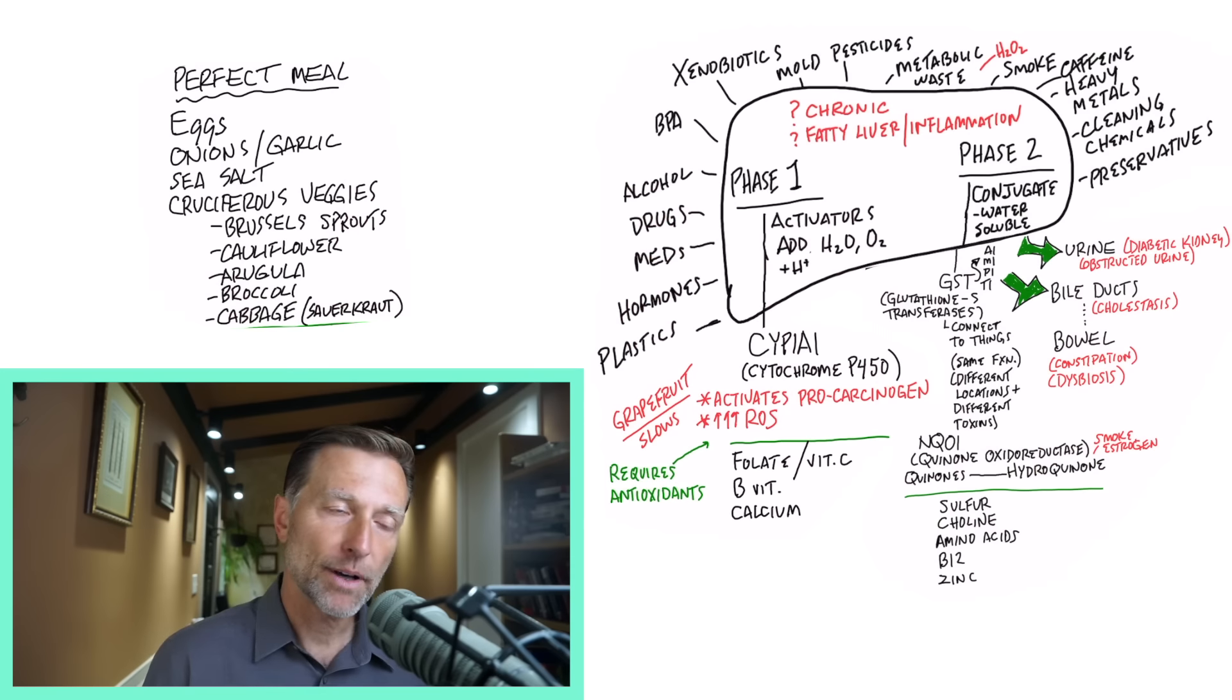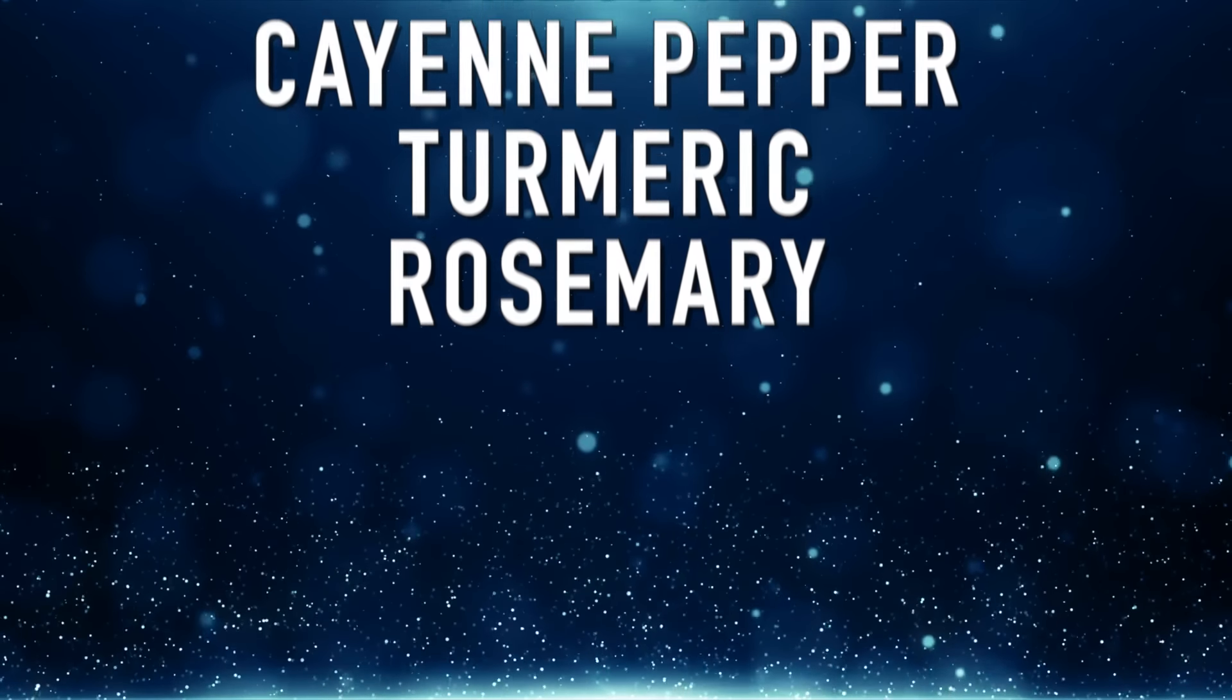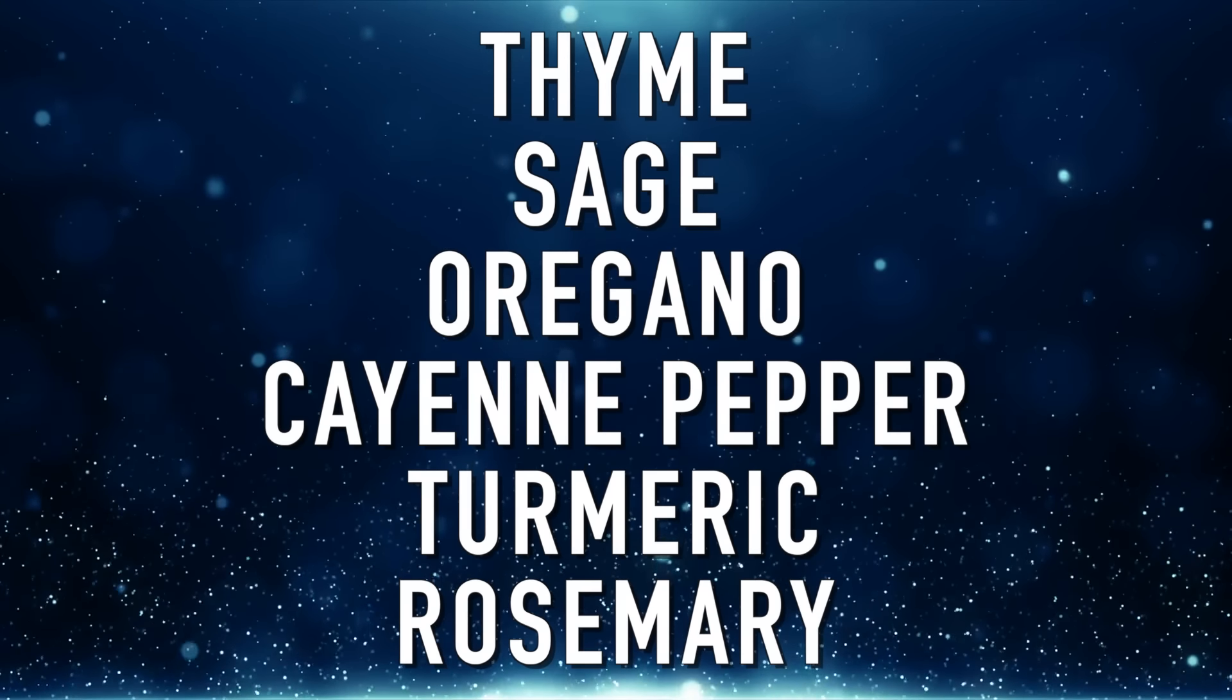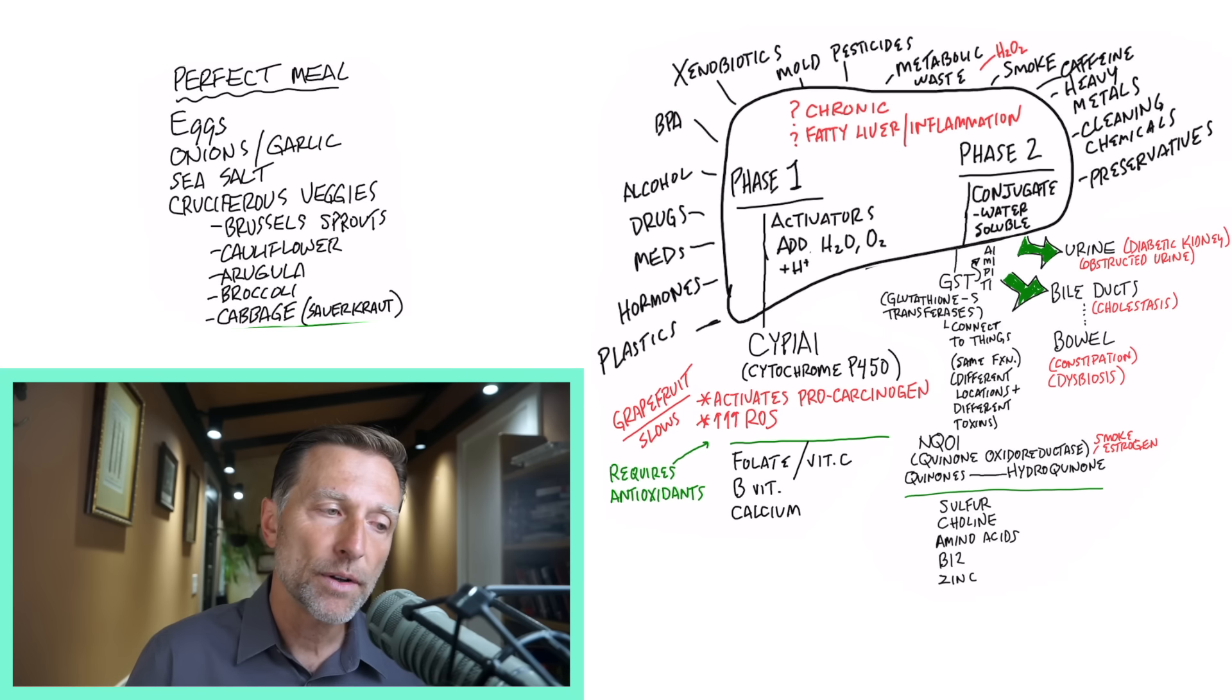add additional herbs if you can. If you can add thyme, sage, oregano, cayenne pepper, turmeric, rosemary, any of these herbs are going to help you in the detoxification process.